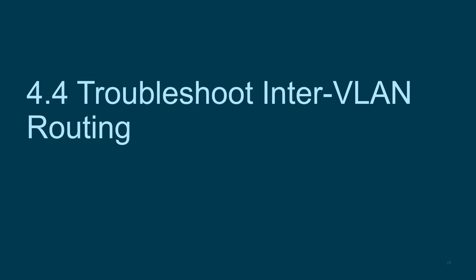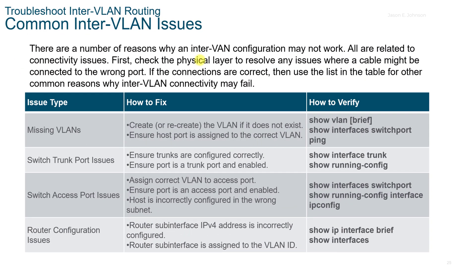4.4 Troubleshooting Inter-VLAN Routing. There are a number of different reasons why the configuration may not work, all usually related to connectivity issues. First, check the physical layer to resolve any issues — make sure network cables are plugged in properly. Always check Layer 1 first. If connections are correct, then use the list in the table for other common reasons. You might have a missing VLAN, so you may need to create or recreate the VLAN. Use the show VLAN brief, show interfaces switchport, and ping commands.